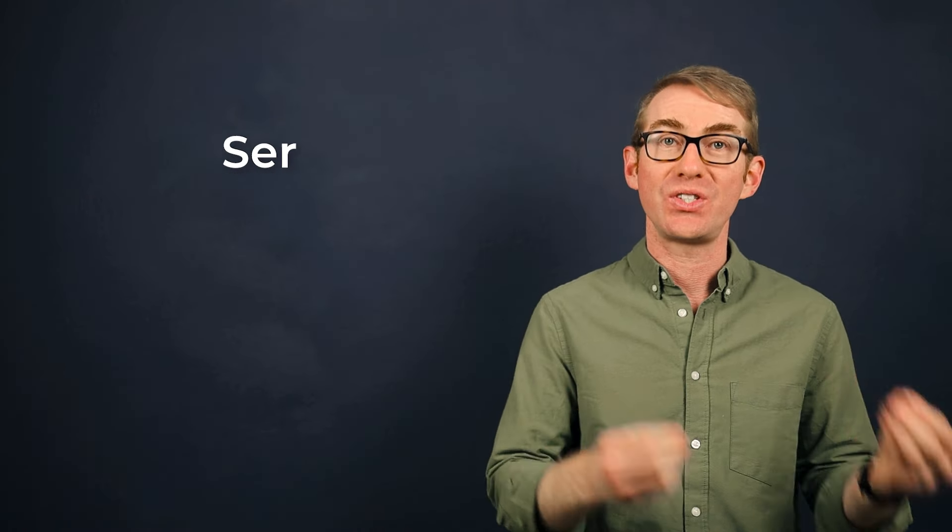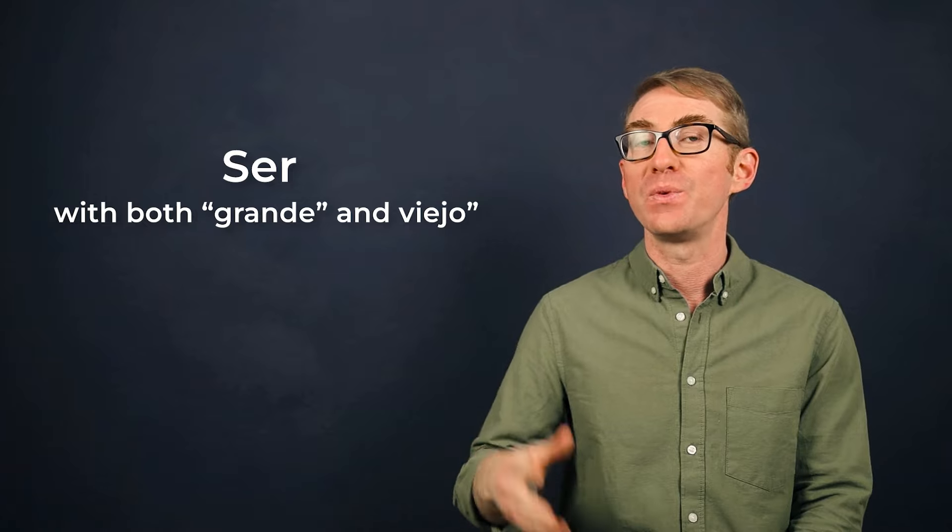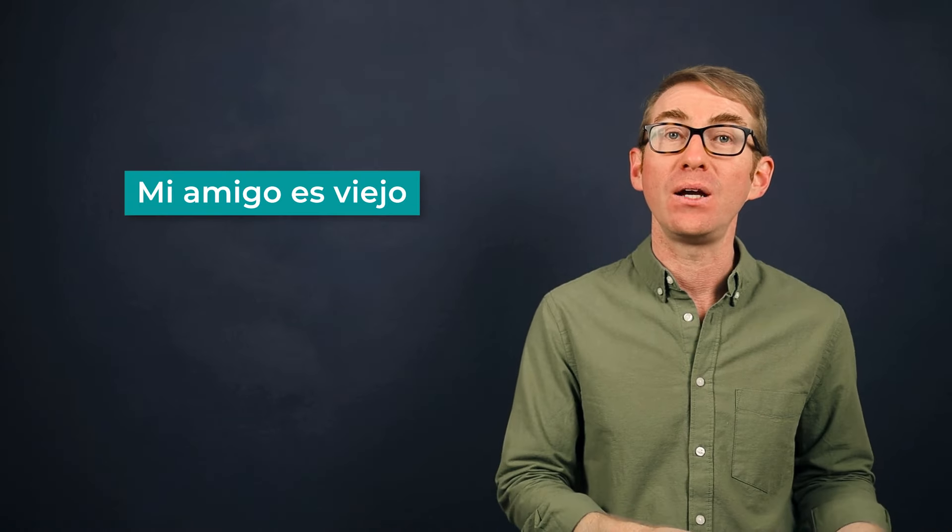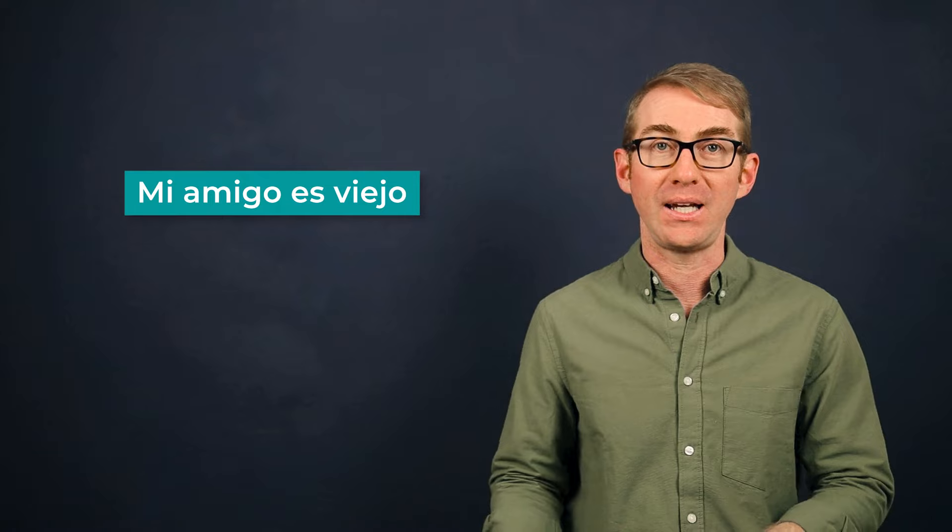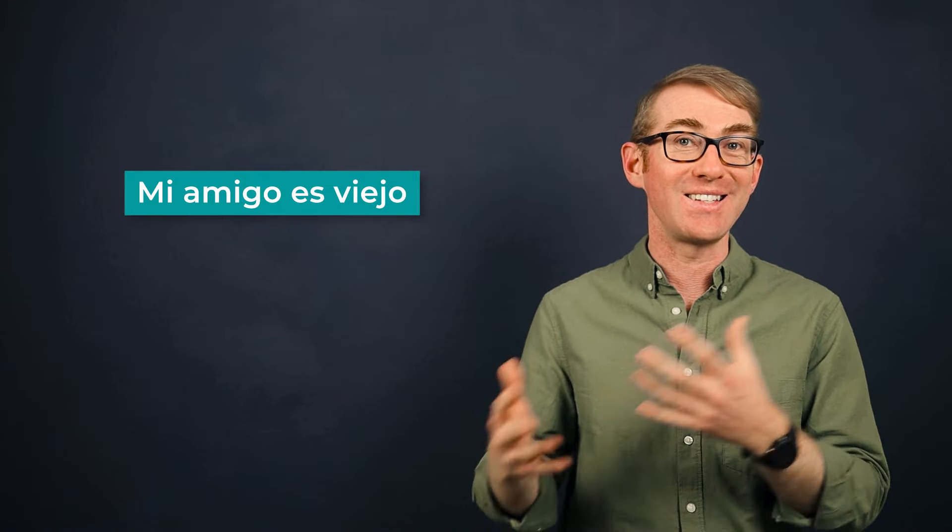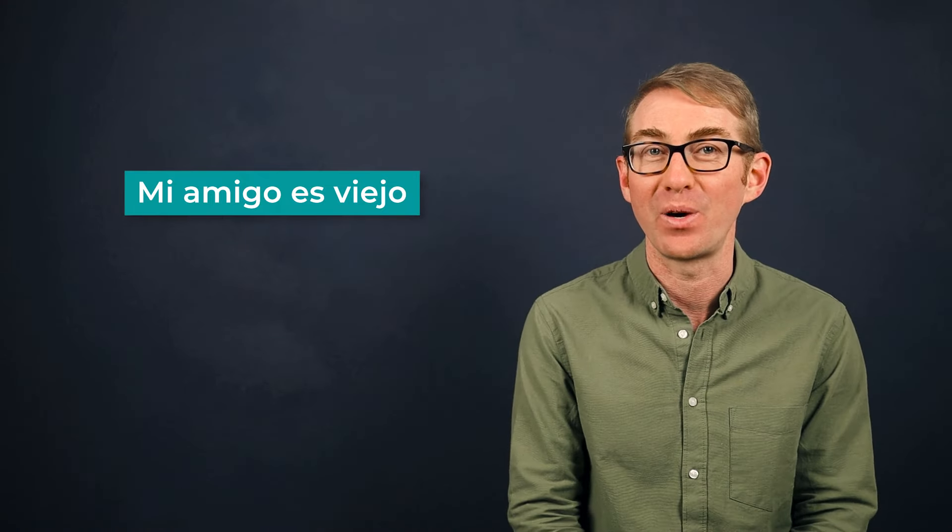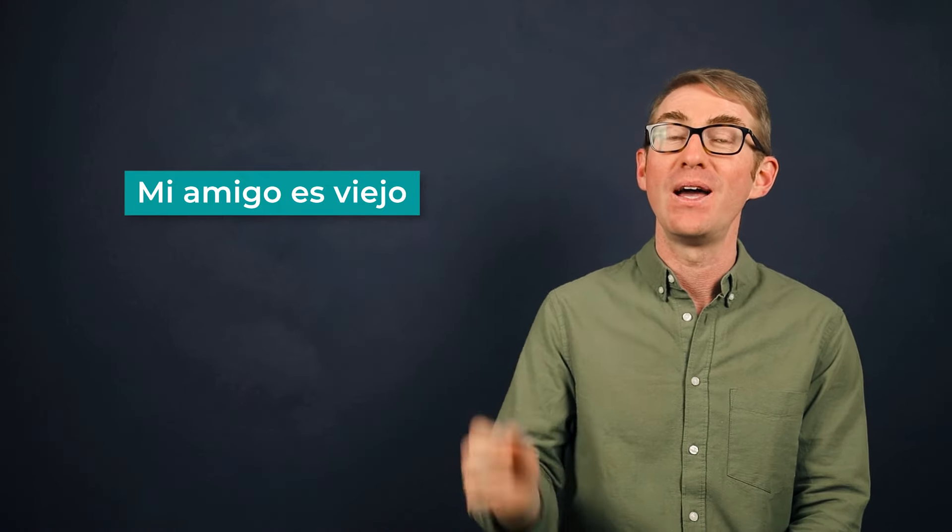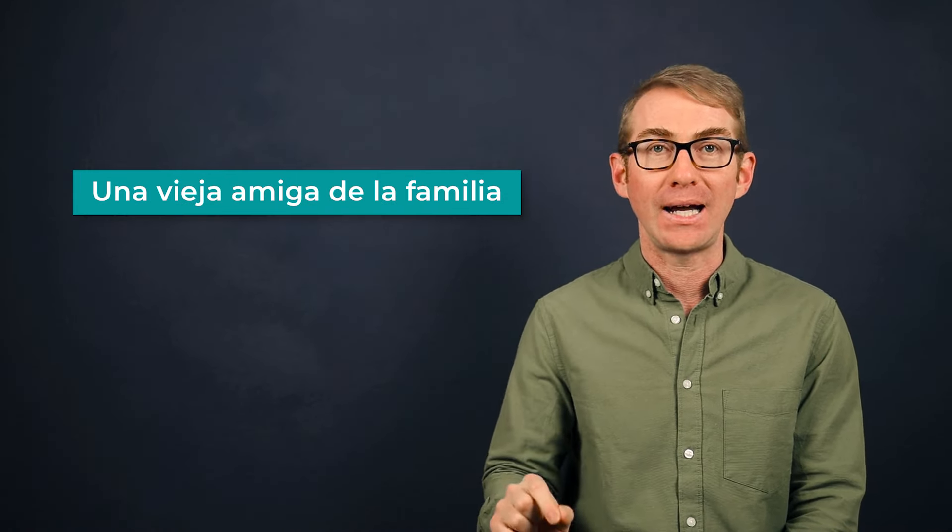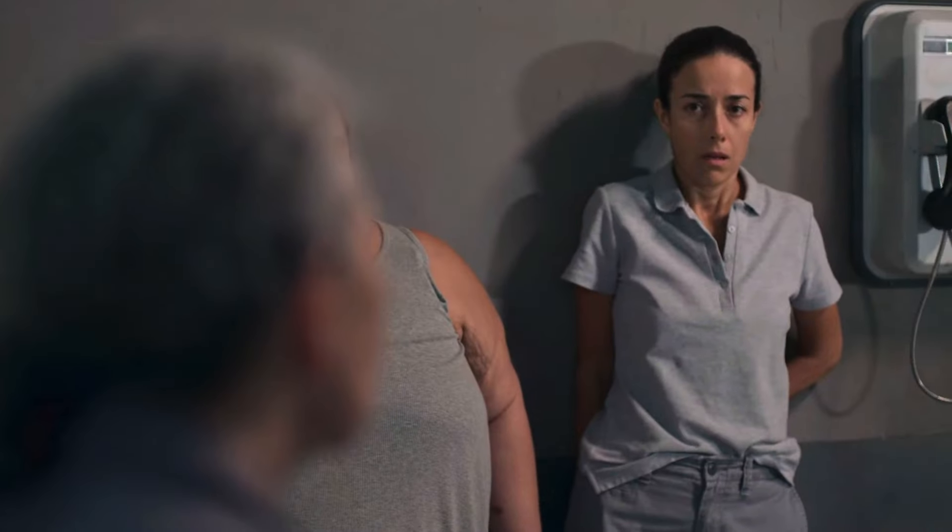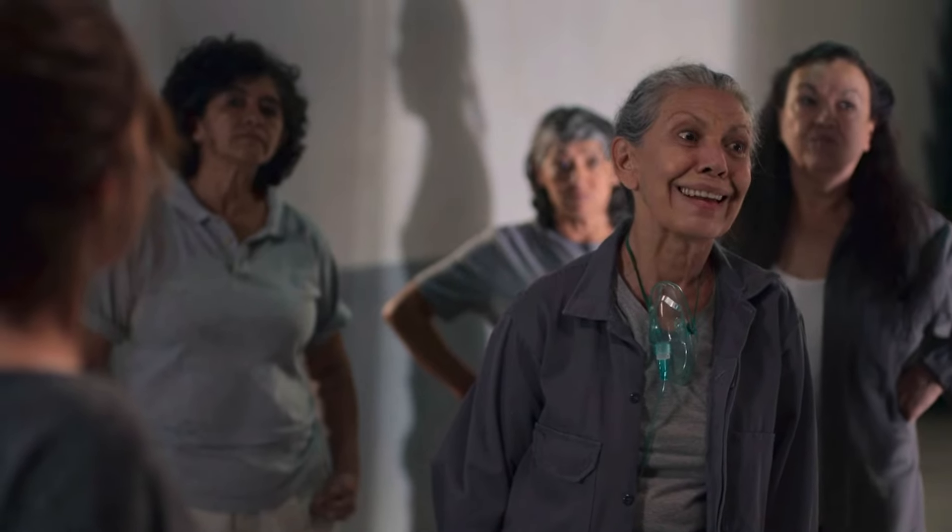Now in terms of ser and estar, we generally want to use ser with both grande and viejo. Then we form a sentence like this, mi amigo es viejo. Then we're going to get that literal meaning. So it's going to mean that this person is old. So if you want to say that someone is a friend that you've known for a long time, then you really need to stick with that first form. Una vieja amiga de la familia.